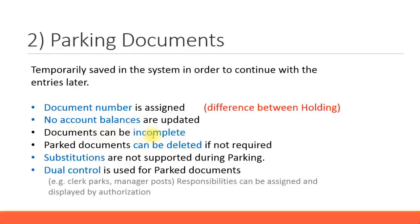Now we have an option called dual control. You may be familiar with this terminology from vendor master and customer master. I mentioned that you have the dual control principle — for some sensitive fields, if one person makes changes or updates to those fields, another user has to go and confirm it to make those changes valid. That was the dual control principle we saw in vendor master and customer master.